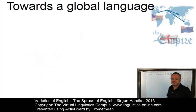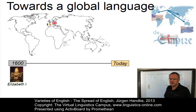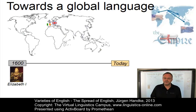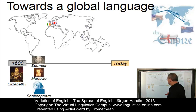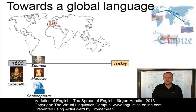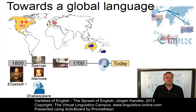The first significant step in the progress of English towards its status as a global language did not take place before the end of the 16th century. By the end of the reign of Elizabeth the First in 1603, literature had boomed through the works of Spenser, Marlowe, and in particular Shakespeare. And Francis Drake and Walter Raleigh had laid the foundation for the expanding influence of English in the New World, and of course later in Australia.